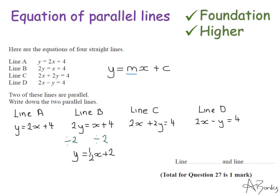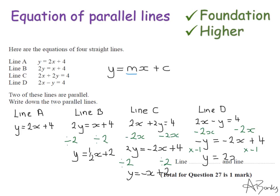Line C, I'm going to have to start by subtracting 2x from both sides. That will give me 2y equals minus 2x plus 4. And then I'll have to divide by 2. So that gives me y equals minus x plus 2. And then line D, I'm going to have to minus 2x from both sides. This gives me minus y equals minus 2x plus 4. And then multiply everything by minus 1 to get rid of the minus y. So I get y equals 2x minus 4.